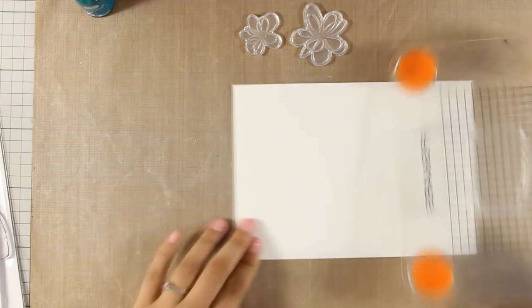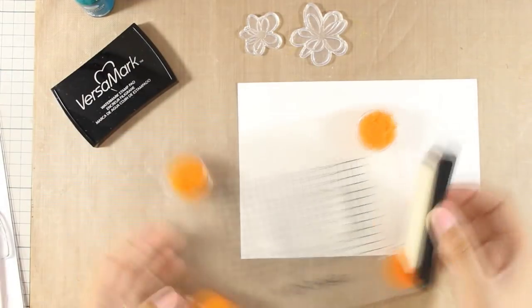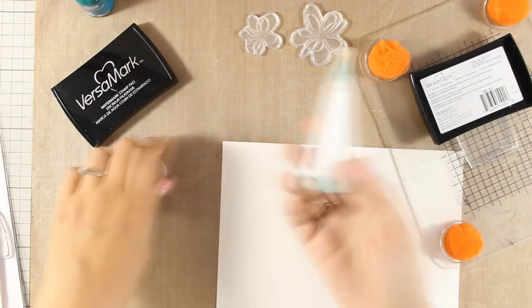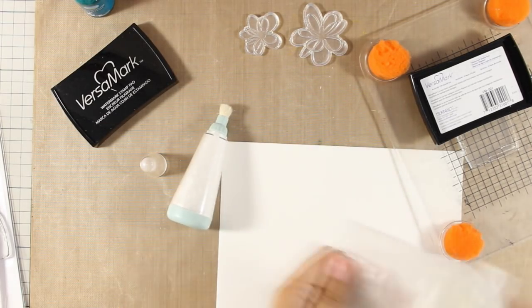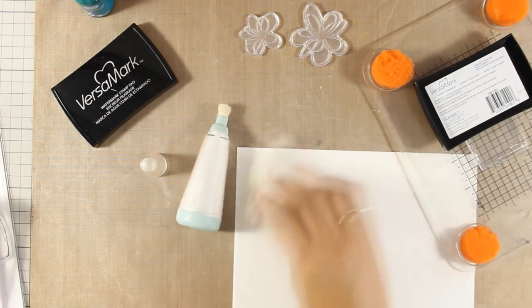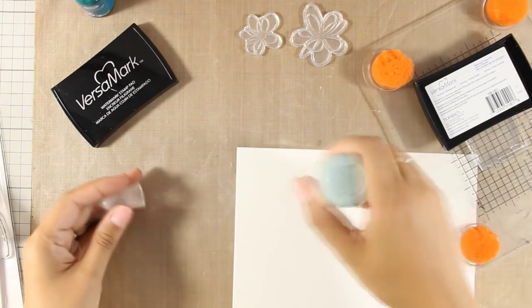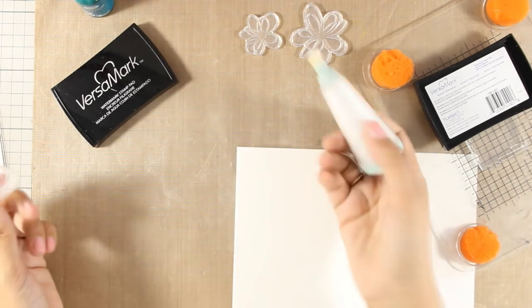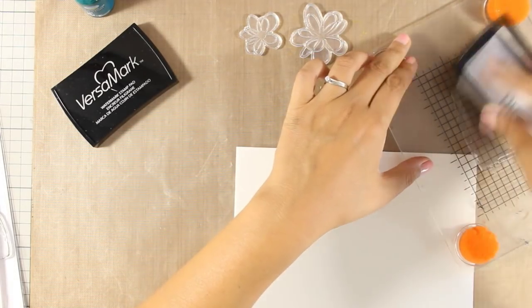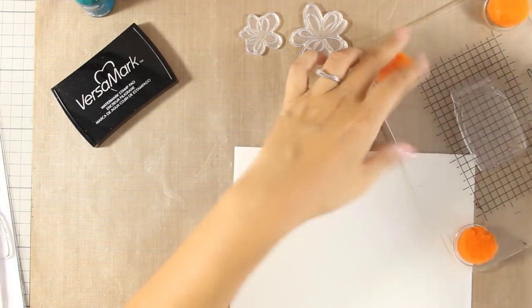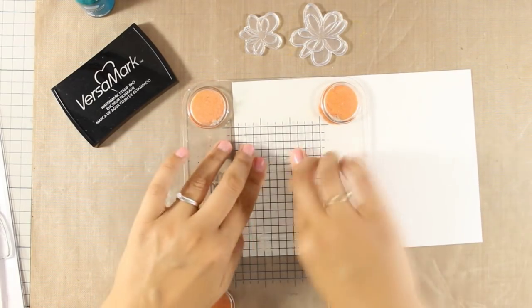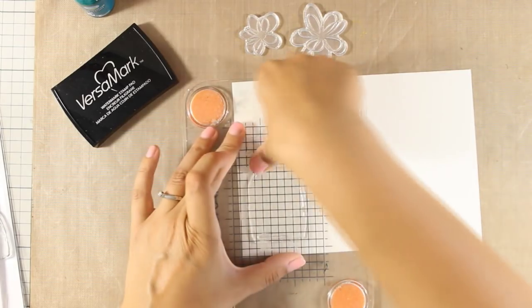Now I am going to use some embossing powder so first of all I am going to stamp all my images on my watercolor paper with Versa Mark. Before I stamp I make sure that I remove every static electricity from the paper and that is what these embossing tools do. There are different types as you can see with a brush or like a pillow which you can use directly on your surface before you stamp. When I stamp I will have a better result because the embossing powder is going to stick only where it is supposed to.